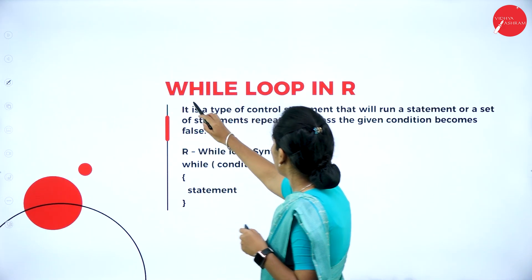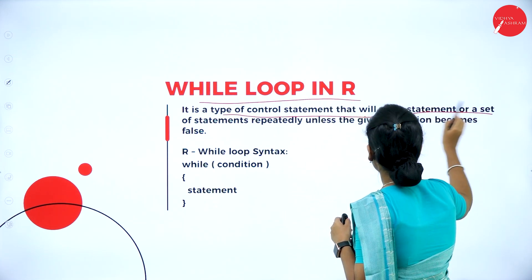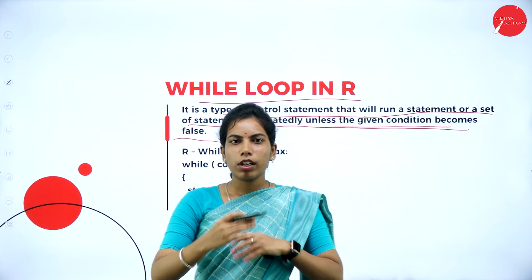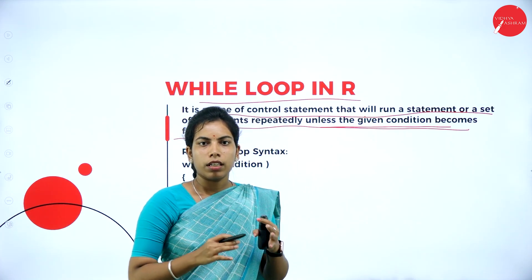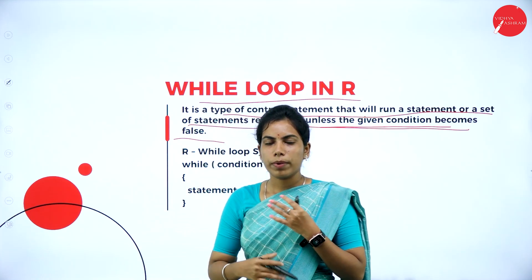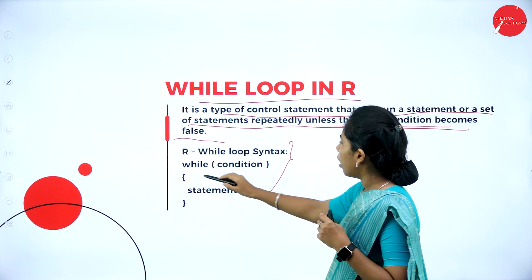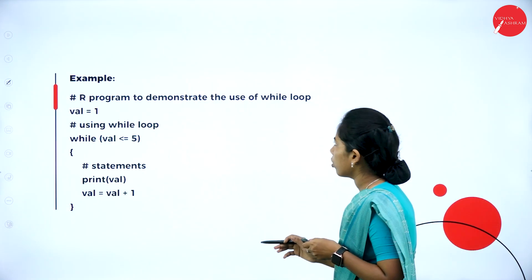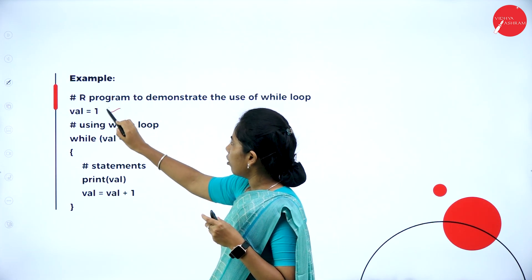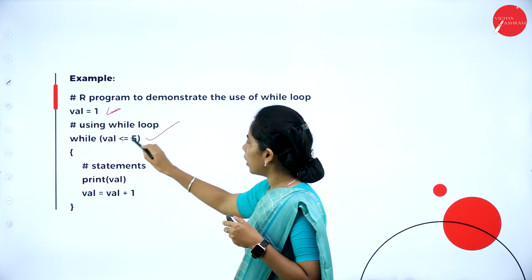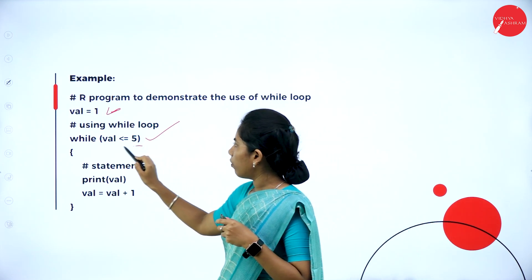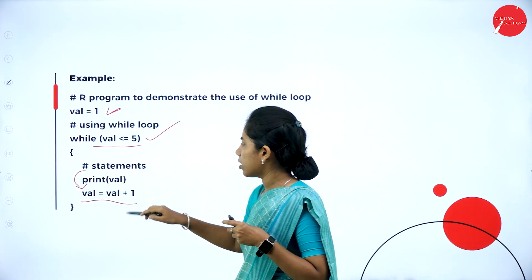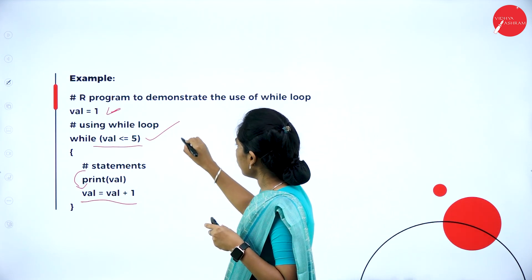The while loop in R is a type of control statement that runs statements repeatedly unless the given condition becomes false. When the condition is false, it exits the loop. The basic syntax is: while (condition) { set of statements }. For example, assigning value = 1 and using while (value <= 5), the statement prints value and then increments value by one.